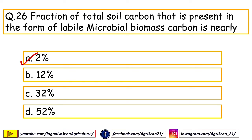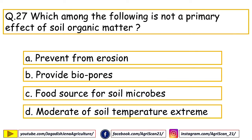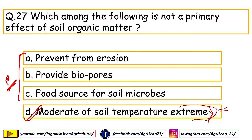Next question: which among the following is NOT a primary effect of soil organic matter? Options are prevention from erosion, provide biopores, food source for soil microbes, moderation of soil temperature extremes. The right answer is moderation of soil temperature extremes — this is a secondary effect resulting from changes in pore space and structure. Prevention from erosion, providing biopores, and food source for soil microbes are primary effects.